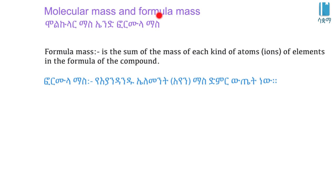For molecular compounds like carbon dioxide and water, we use molecular mass. For ionic compounds, we use formula mass, as the compound exists as a lattice rather than discrete molecules.